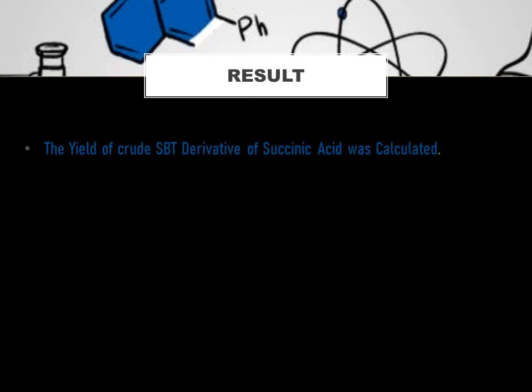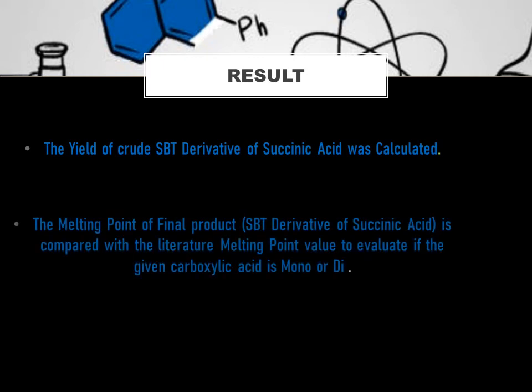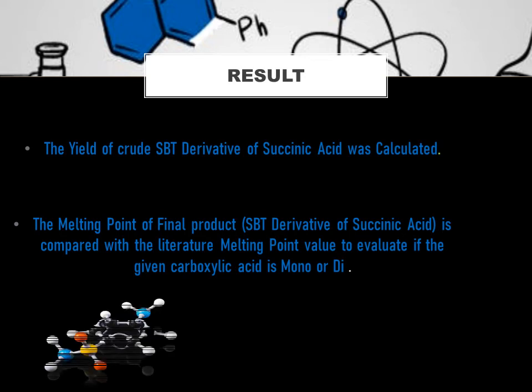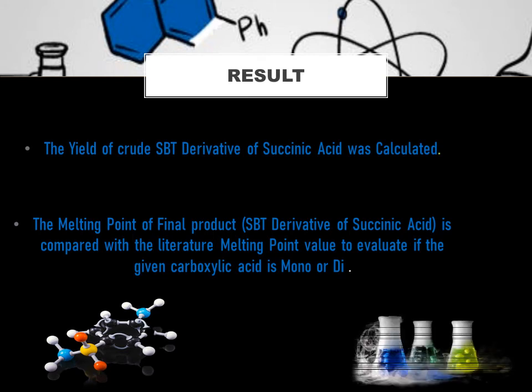Now we are done with the aim, materials required, theory, and procedural part. Now comes the result. The yield of crude SBT derivative of succinic acid was calculated. The melting point of the final product — the SBT derivative of succinic acid — is compared with the literature melting point value to evaluate if the given carboxylic acid is mono or dicarboxylic. This is the gist of this experiment. As I mentioned, one of the major uses of SBT derivative is to identify mono and dicarboxylic acids. So we evaluate that succinic acid is a dicarboxylic acid.